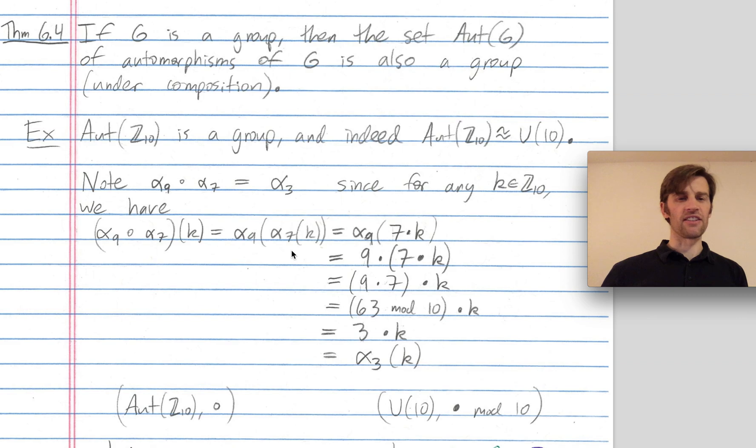Alpha 7 just multiplies by 7, so alpha 7 of k is 7 times k. Then alpha 9 of this input is just 9 times whatever is inside. 9 times 7 times k is, by associativity, the same as 9 times 7 times k. Then 9 times 7 is 63. We're in this group Z mod 10, and so 63 mod 10 is just 3. So mod 10, multiplying by 7 and then by 9 is just the same as multiplying by 3.